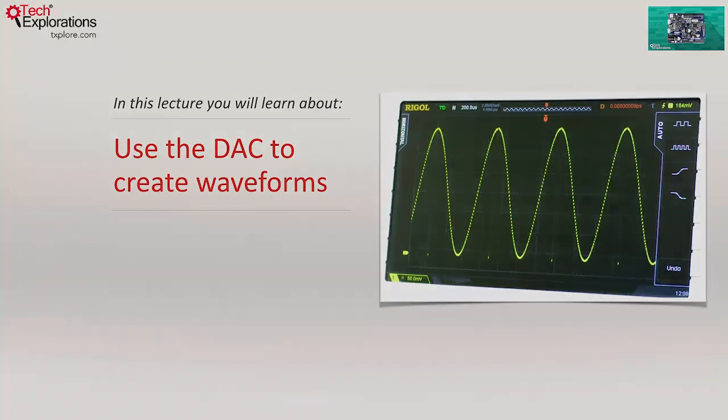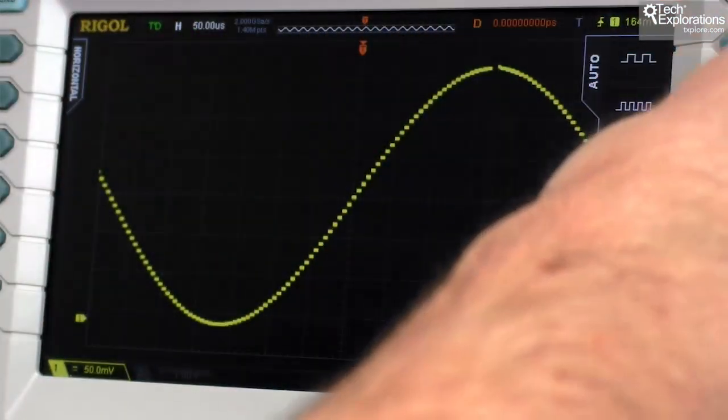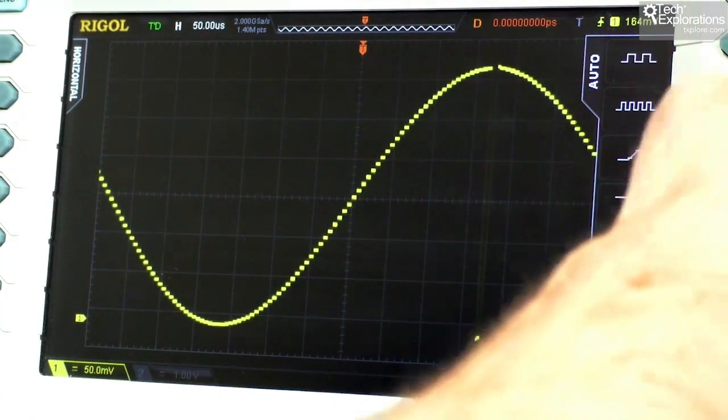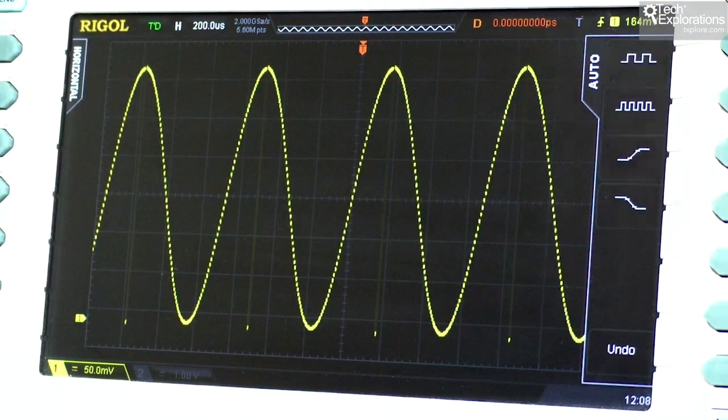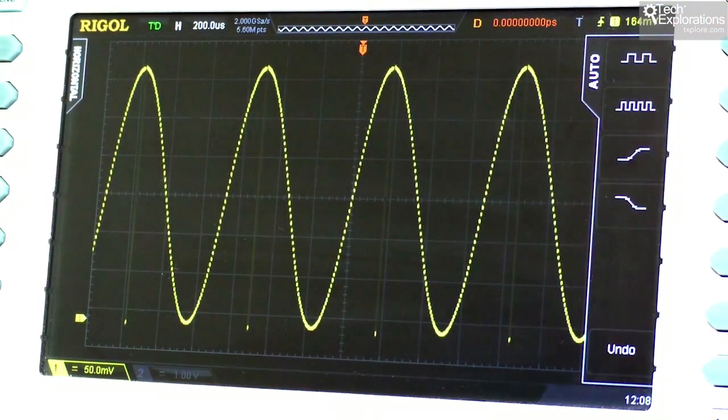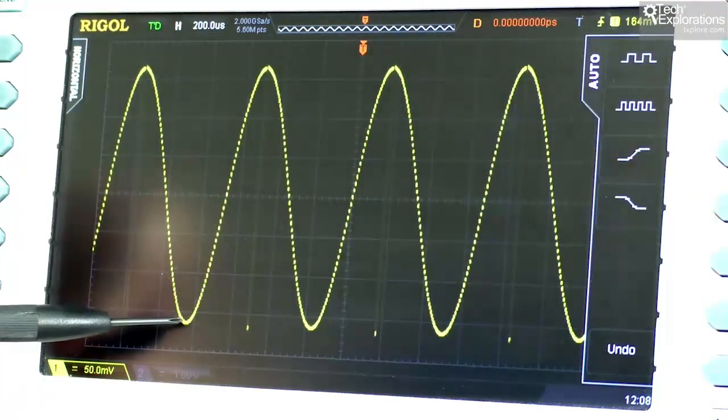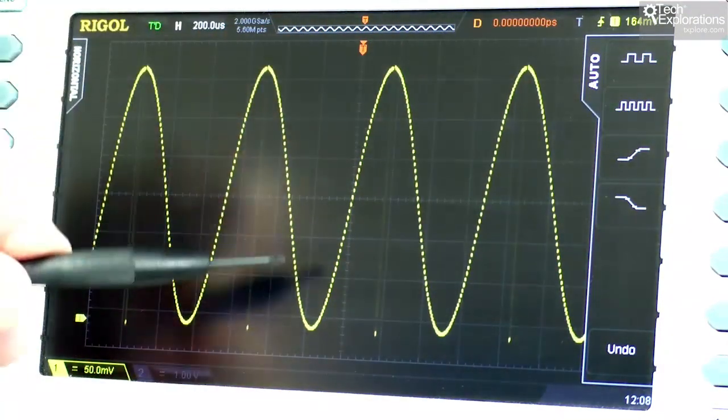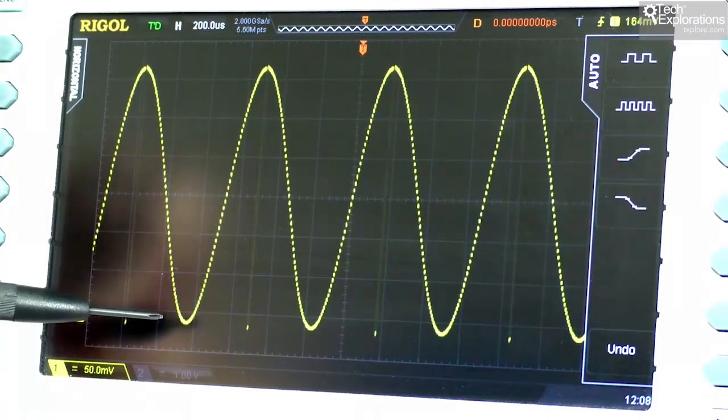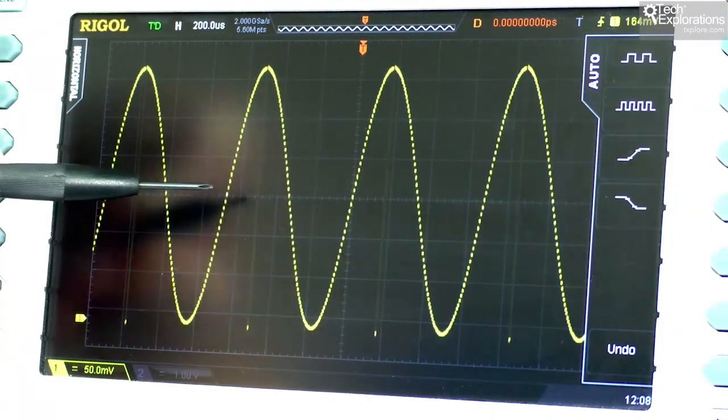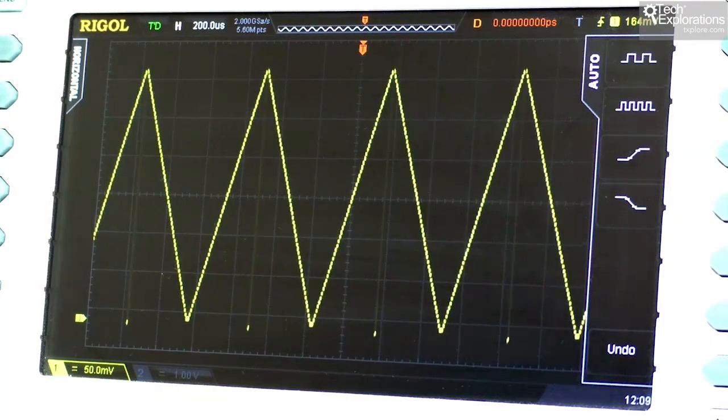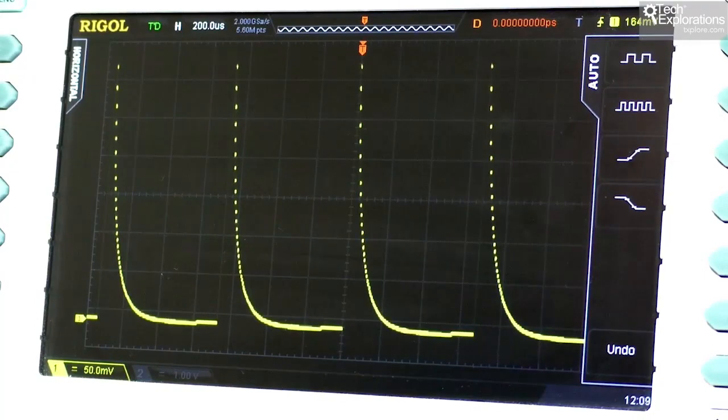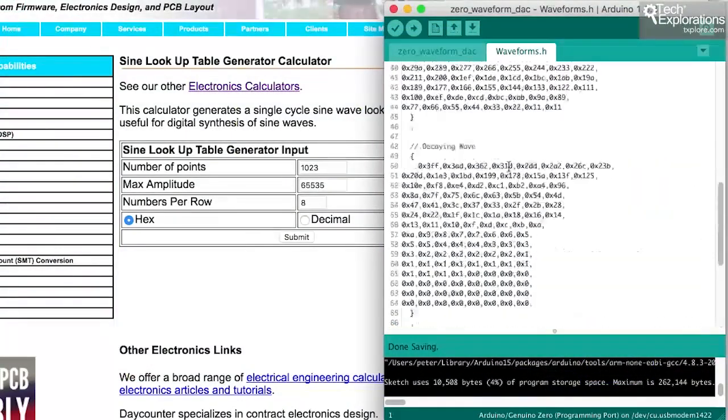Let's take a closer look. In this lecture, I wanted to give you another example of things that you can do with a true digital-to-analog converter, like the one that you'll find in the Arduino Zero. I will set up my Arduino Zero so that it generates waveforms, and have a look at those waveforms in the oscilloscope. So, I'll be able to generate, for example, a true sine wave waveform, or a triangular wave and a decaying wave. And I'll also show you how you can generate your own waves.